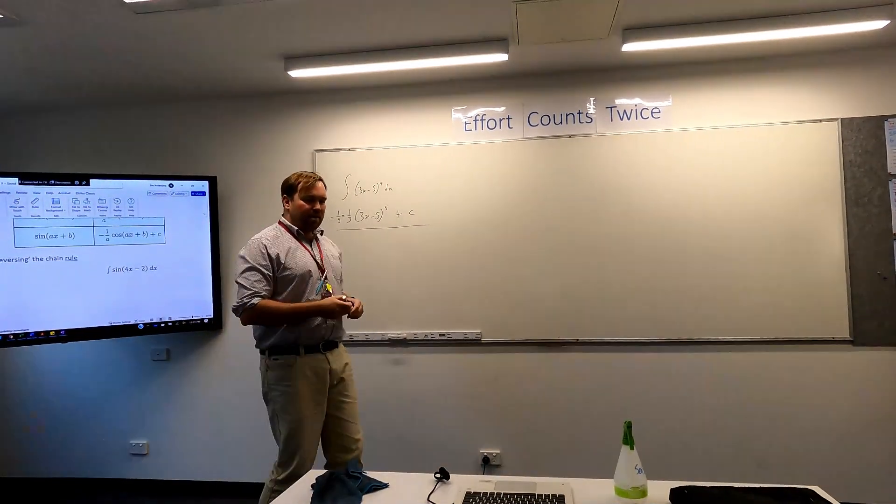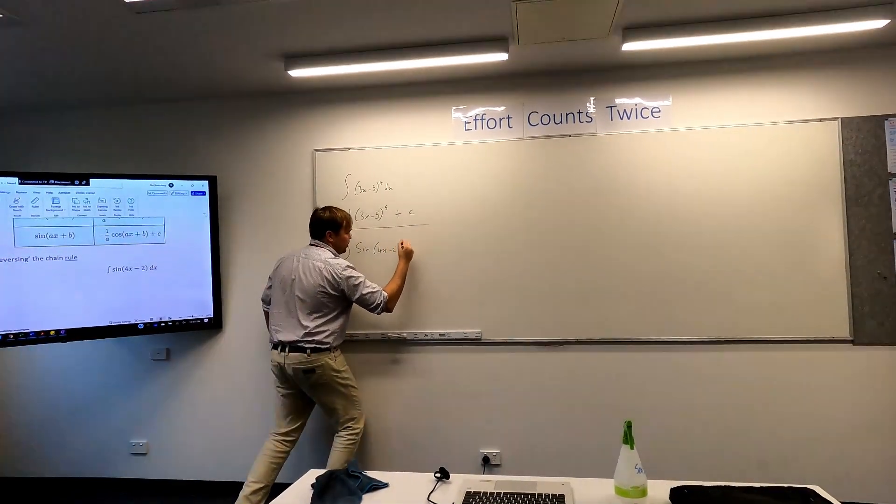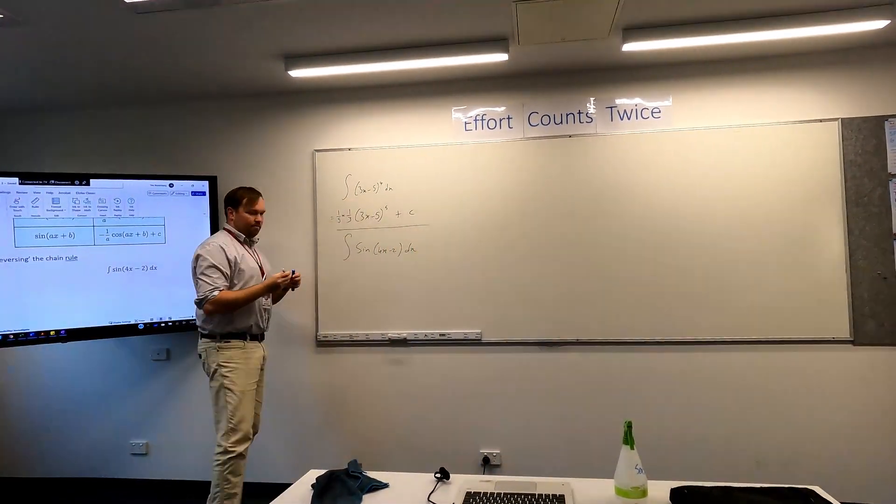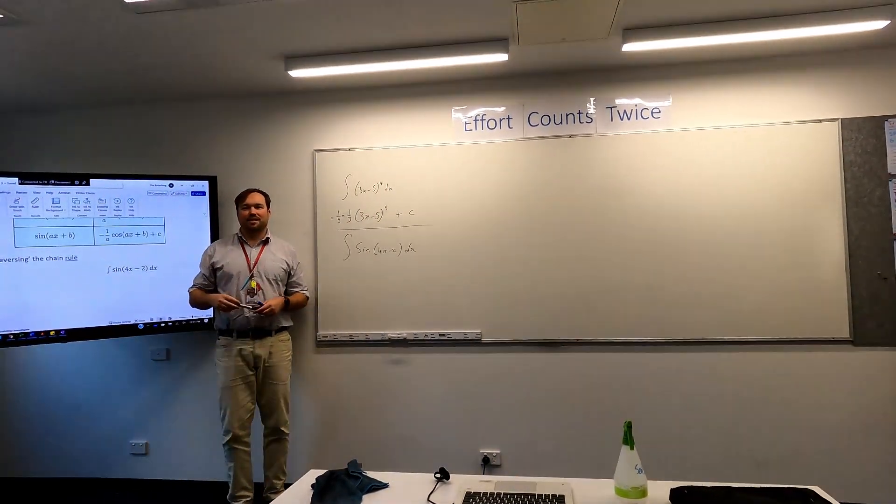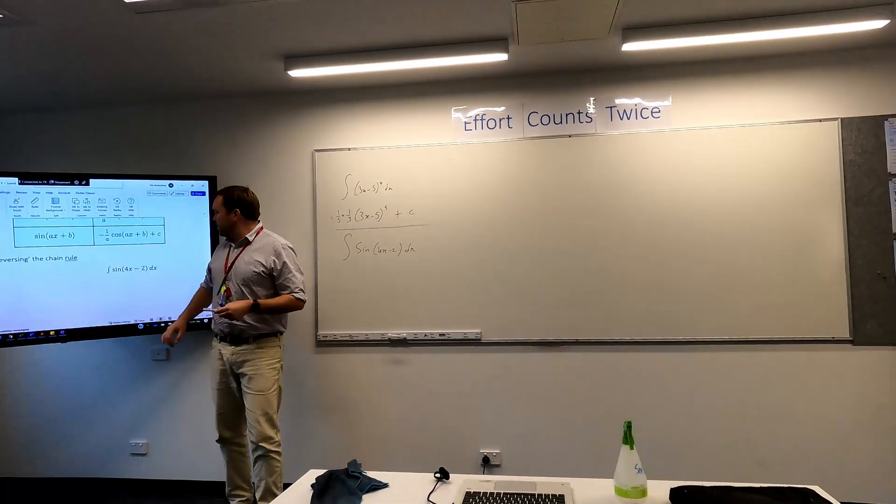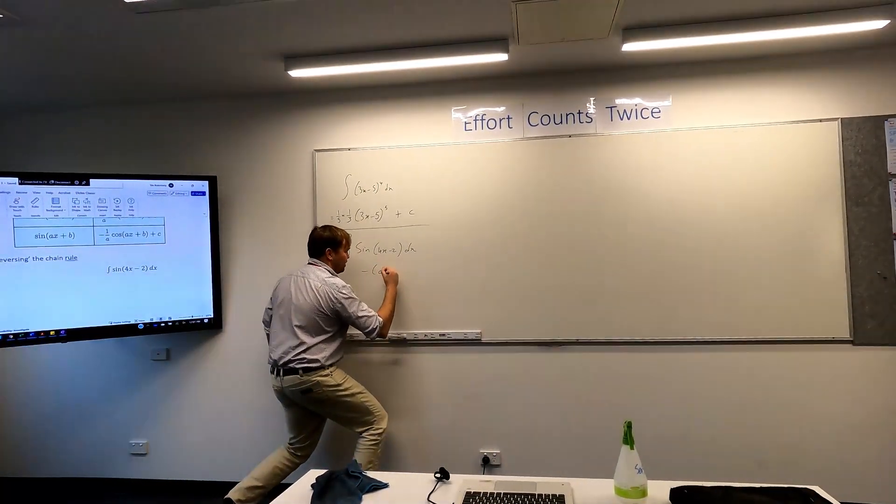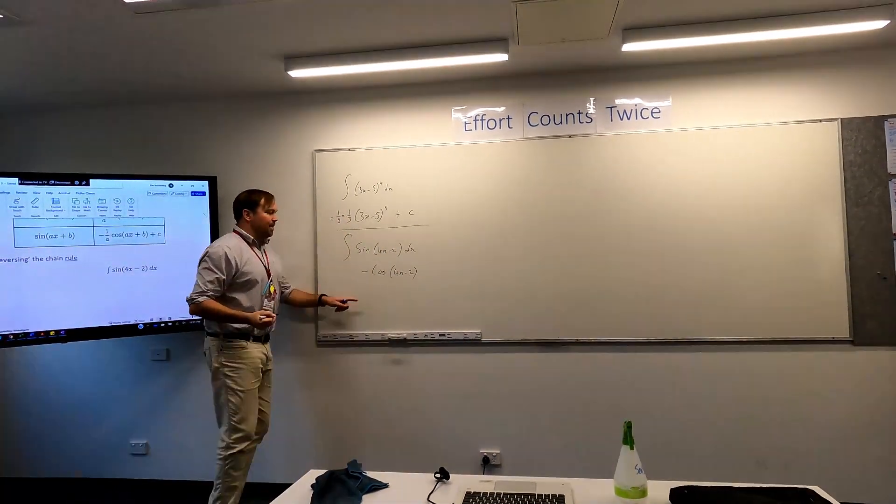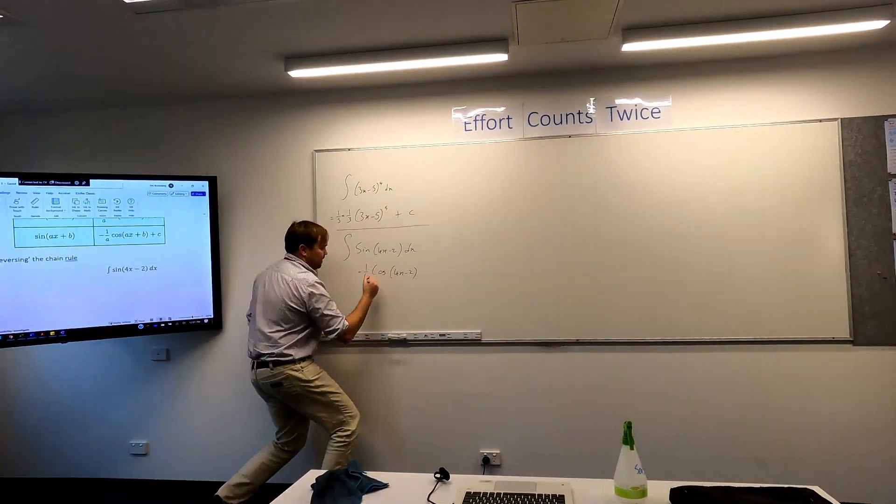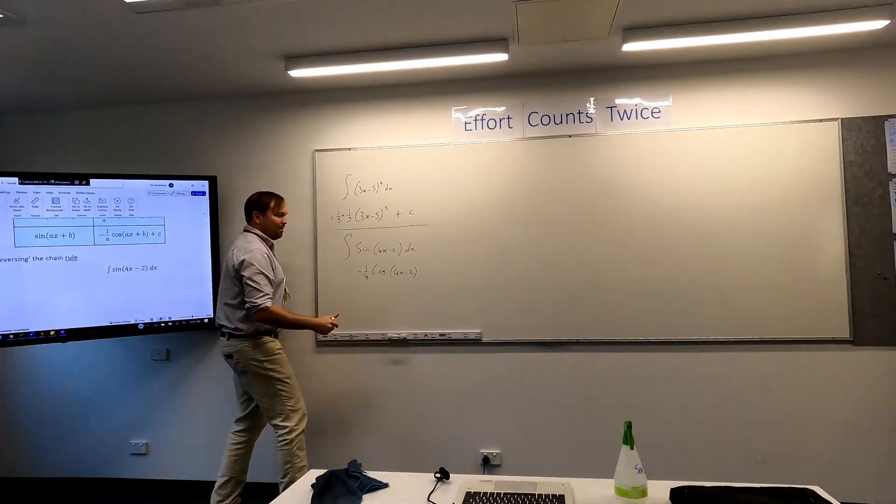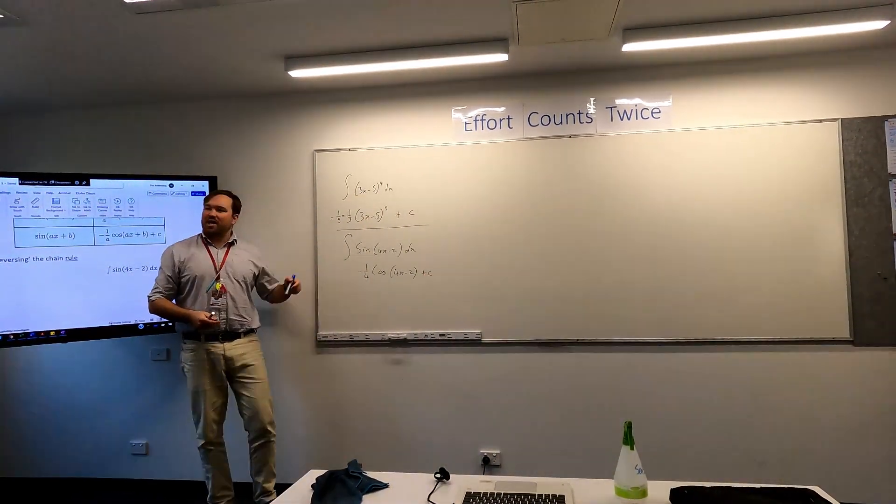Alright, the next one. Integral of the sine of 4x minus 2 dx. Where would the sine have come from? A negative cos. Good. A negative cos. And if we're going to differentiate negative cos 4x minus 2, then that will have thrown a 4, so it lives here as a quarter. You still need the negative, and you need the plus c. And you can always check by differentiating it back.